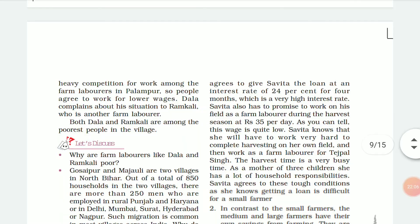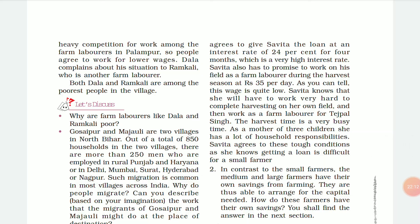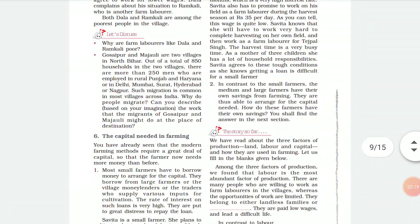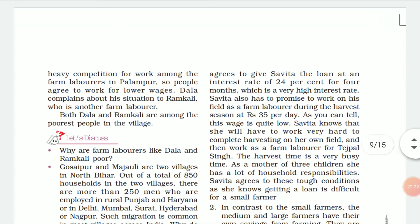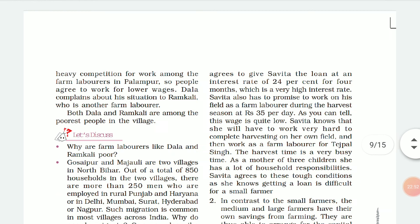Due to heavy competition, Dala agrees to work for 35 to 40 rupees. He complains about his situation to Ram Kali, another farm labourer. Both Dala and Ram Kali are among the poorest people in the village, dependent on daily wages with no choice but to accept whatever the large or medium farmers pay. This concludes today's lesson; students are requested to answer the discussion questions in their notebooks.